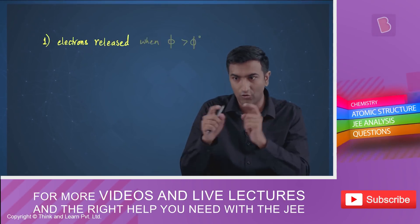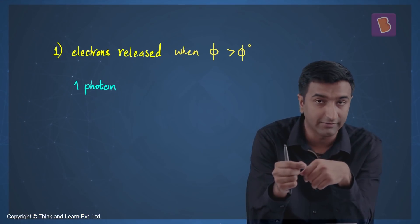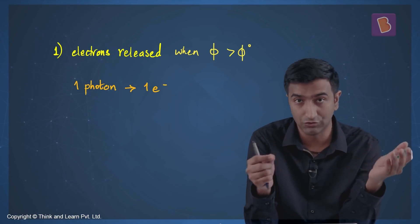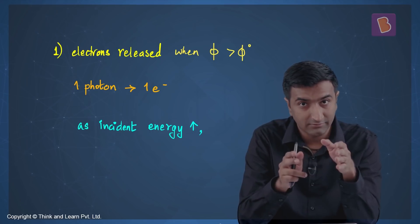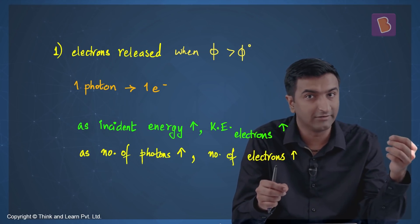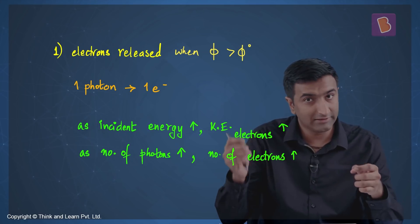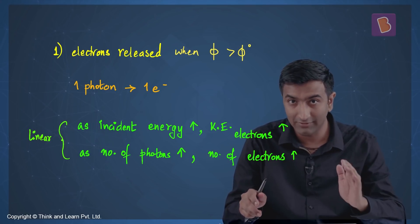Let's look at both of these things in more detail. Electrons are released only if the incident energy φ is greater than φ₀, and — most importantly — if one photon strikes, then one electron is released. As incident energy increases, kinetic energy of the electrons increases. As the number of photons increases, the number of electrons increases. These are two separate but both linear relationships — keep this in mind. If you've understood this, you'd know the answer right away.